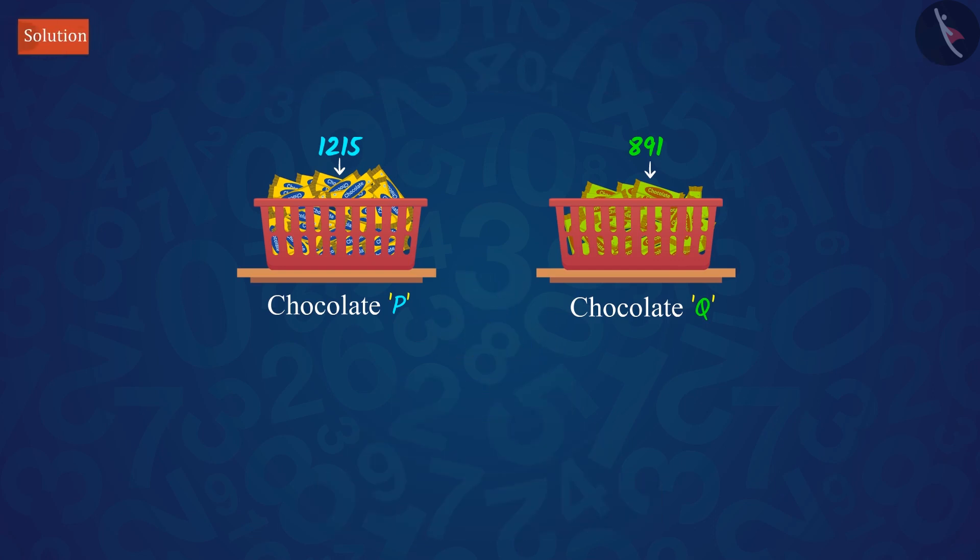You can also solve this by hit and trial method, but here we will solve this in a stepwise manner, for which we will find the HCF, that is, highest common factor of the number of both types of chocolates.